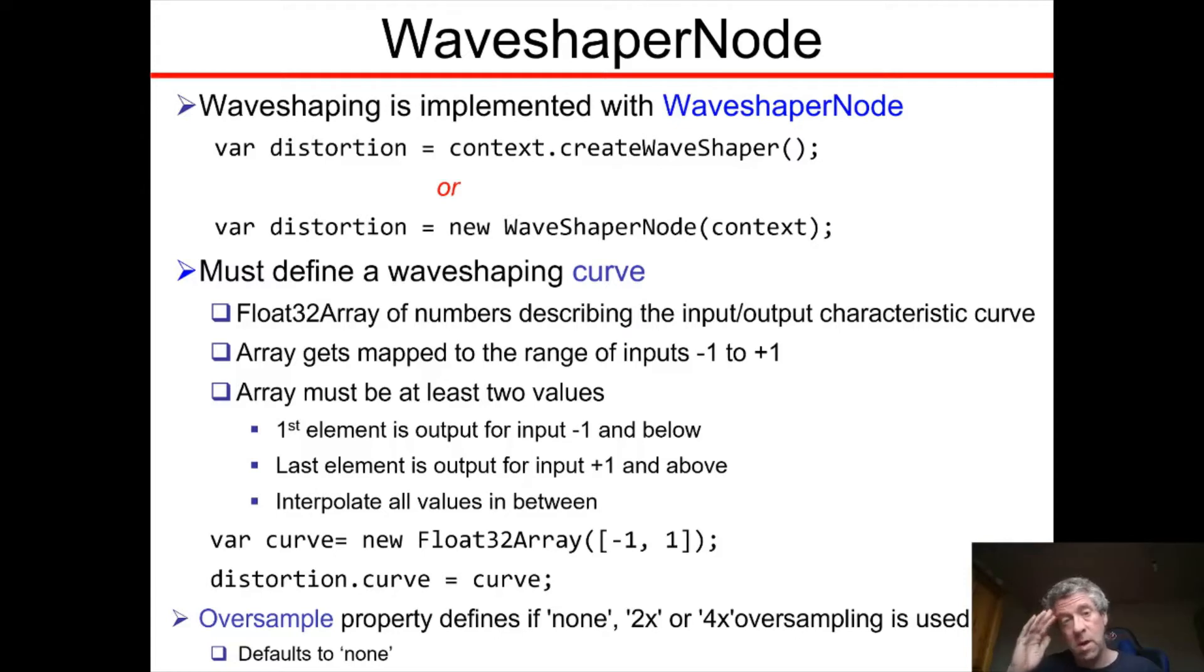But we must define a wave shaping curve, and this is the input-output characteristic curve that one typically sees with distortion effects and certainly with wave shaping effects. In the Web Audio API, in JavaScript, it's a Float32Array of numbers. The array can be almost any size but it must have at least two elements.